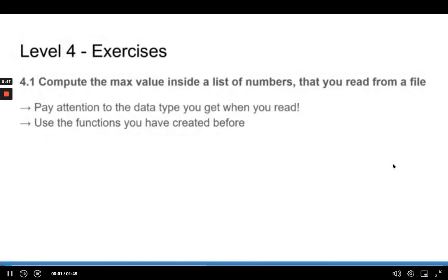Here are the exercises for level four of this course — two exercises. The first one: compute the max value inside a list of numbers that you read from a file. Computing the max value is something you have done before and you have a function for it. You can put that function inside the Python module. We already have the myComputations module. Also pay attention to the data type you get when you read from the file — it's a string, so make sure to cast it accordingly.